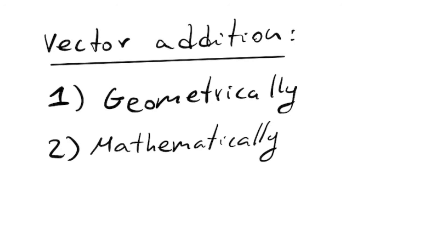Now there are two ways in which we can add a vector. One is geometrically, and the second is mathematically. But first let's start by looking at the geometric way of adding a vector.